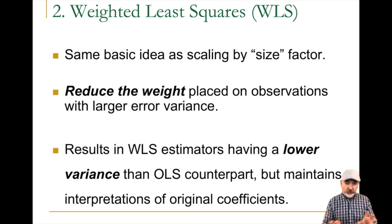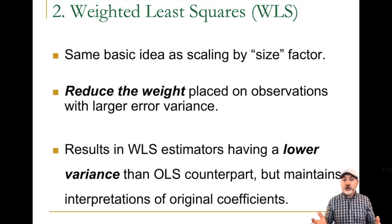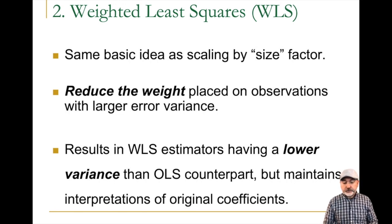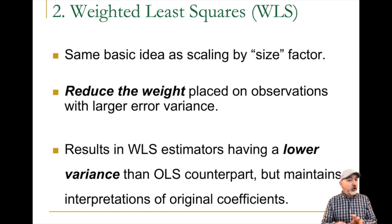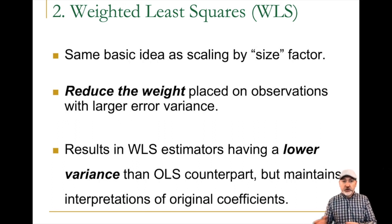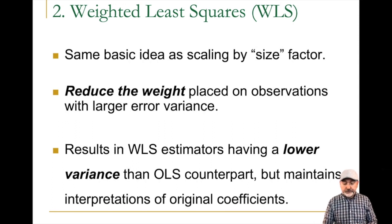Even though the variables are going to look a little funny, we'll still maintain the same interpretation and meaning of our slope coefficients — our marginal effect estimates. I'm not going to go through the proof of efficiency showing that weighted least squares is more efficient than OLS; we'll just walk through the logic and mechanics of applying it.